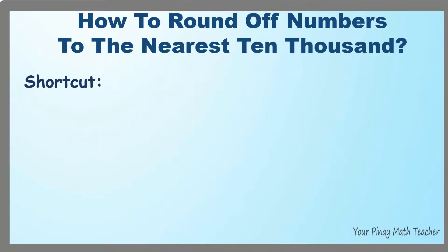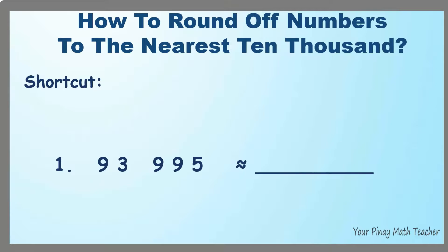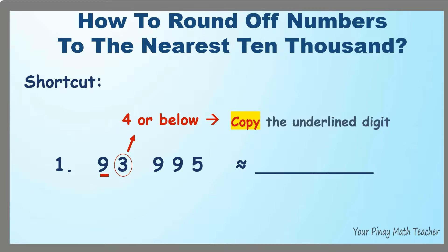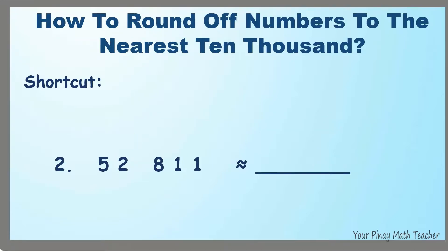What if there is no number line to refer to? How to round off numbers to the nearest 10,000? For example, 93,995. Underline the 10,000's digit, which is 9, and then look at the digit to its right. If it is 4 or below, copy the underlined digit. Since it is less than 4, copy 9 and 3, 9, 9, and 5 become zeros. So, 93,995 is nearest to 90,000.